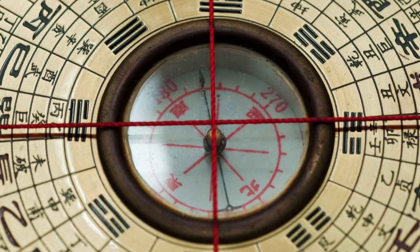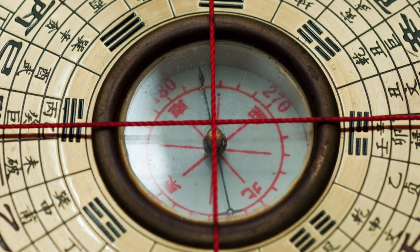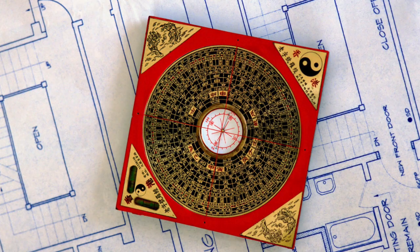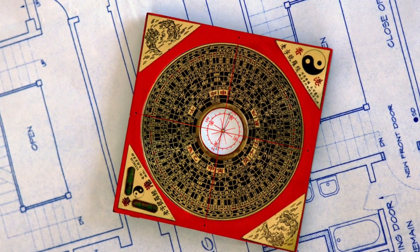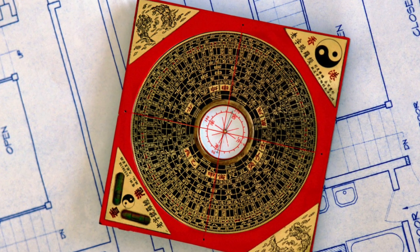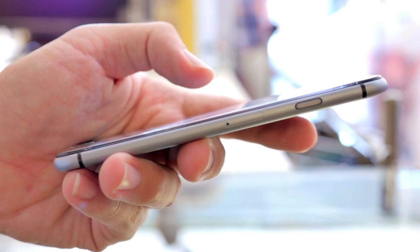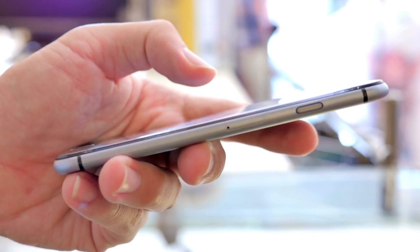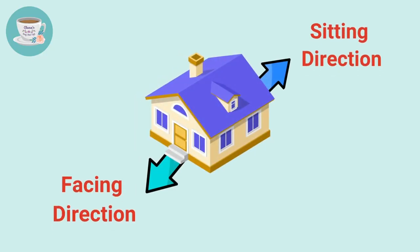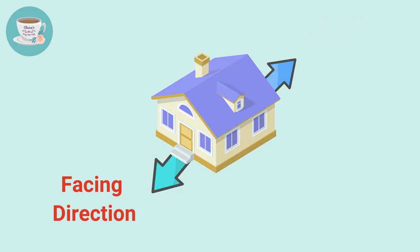Since not many people would have a Chinese Luo Pan at home, we can still use a compass or phone app to measure the directions. Now I will show you a simple way to measure your house's sitting and facing directions using your phone.